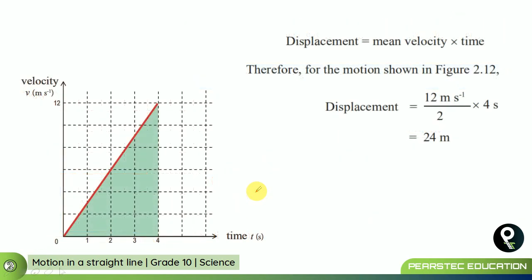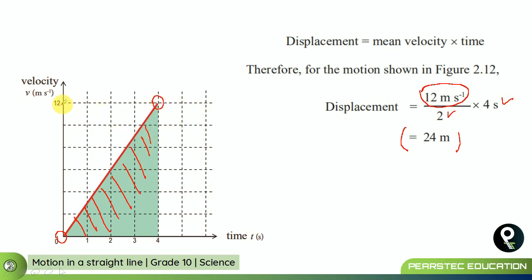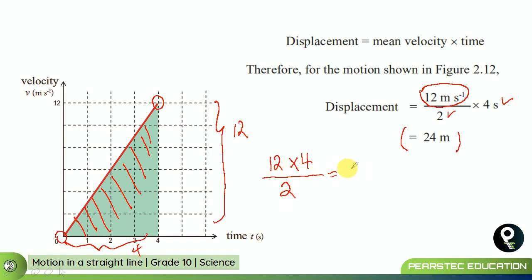Now, when the graph shows acceleration, we apply the mean velocity formula: final velocity minus initial velocity, which is 12 minus 0, divided by 2, multiplied by 4 seconds, giving 24 meters. We can also find this from the area: 12 multiplied by 4 divided by 2 equals 24 meters. This is an easy way to find displacement from the graph.